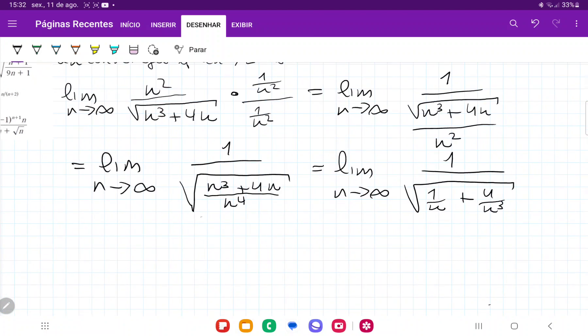And so let's see what happens when we take this limit. Well, the limit as n approaches infinity of 1 over n, it's like 1 divided by a very large number. This is going to tend to 0. Similarly, the limit as n approaches infinity of 4 over n cubed, well, that 4 is going to be divided by a very, very large number. This is also going to go to 0.